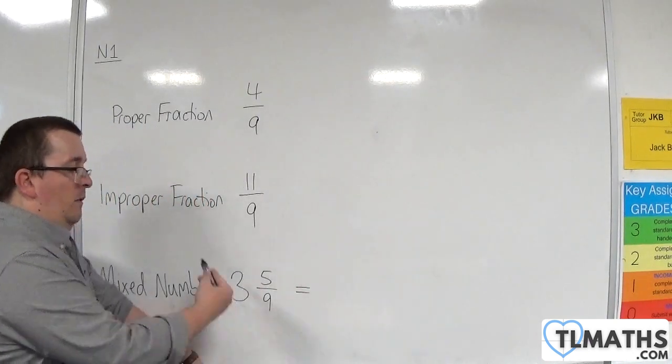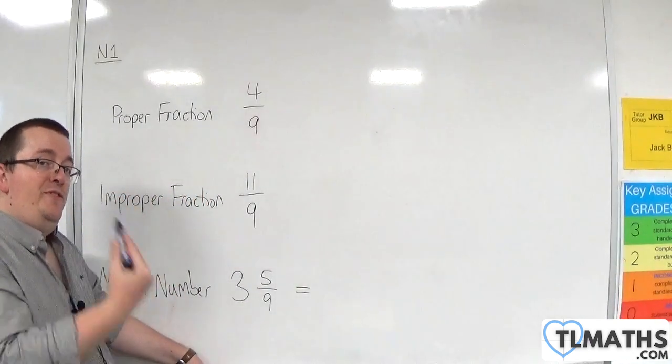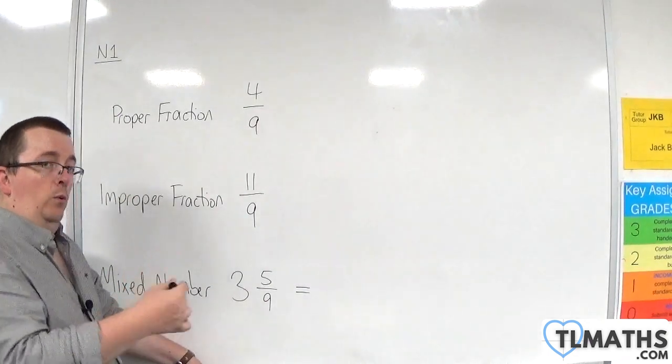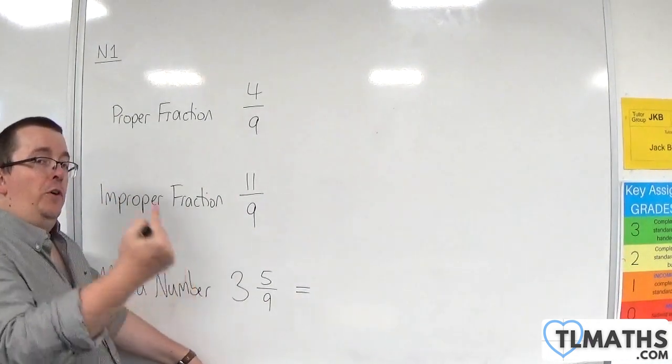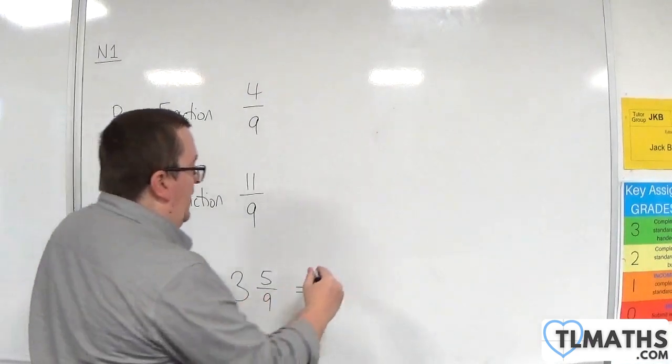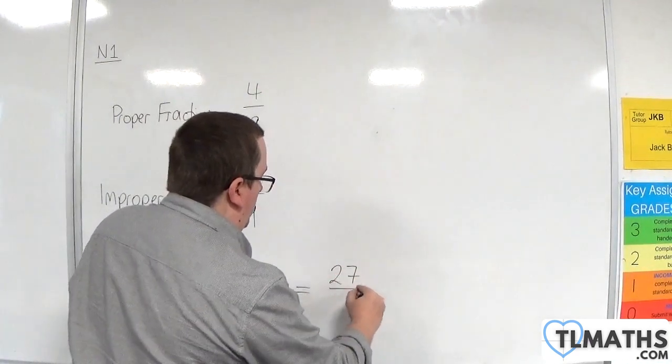So 3 wholes—if we're working with ninths, one whole is 9 over 9. If you've got 3 of them, you must have 27 over 9.